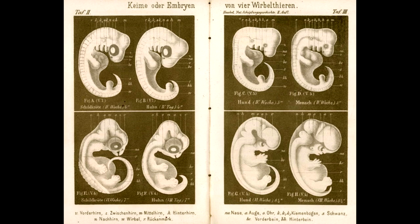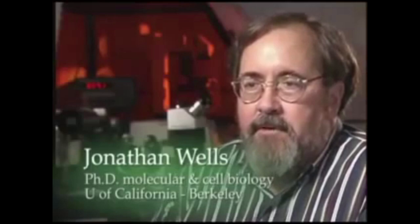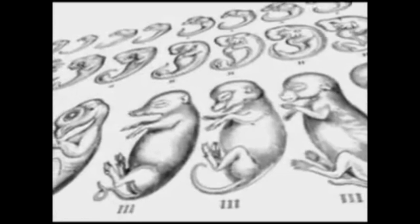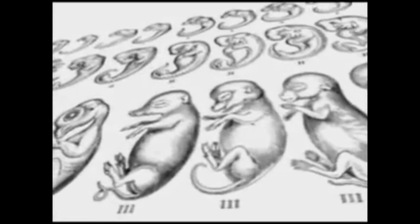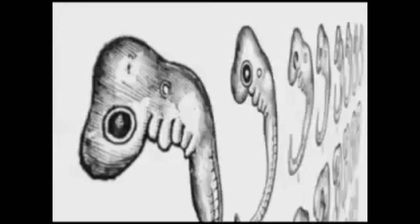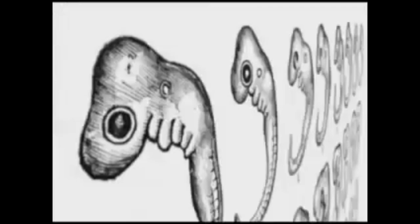Have you ever heard of Haeckel's embryo drawings? These drawings in the late 19th century were presented as evidence to support Charles Darwin's theory of common descent. German naturalist Ernst Haeckel produced drawings that seemed to confirm Darwin's claim. He made famous drawings of vertebrate embryos — fish, humans, salamanders, chicks, turtles, and so on — trying to show that all these different vertebrates look very much the same as early embryos. Their early similarities showed that they came from a common ancestor, and differences arose only later.